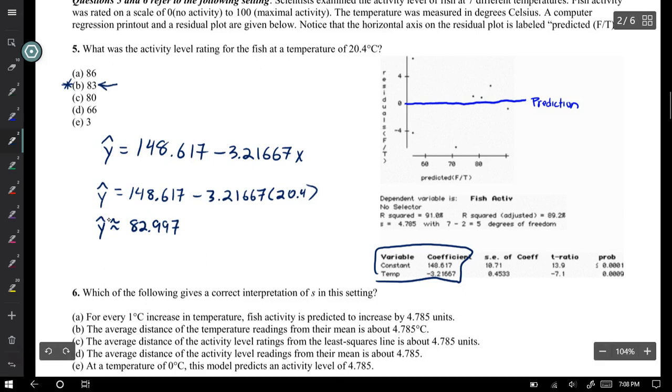You have to be careful, because y hat is your predicted. It's asking what is the actual activity level rating? We want to know what's the actual value. We're not asking for the predicted value.